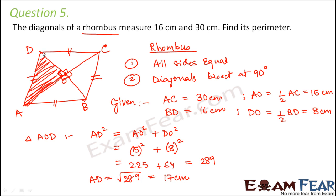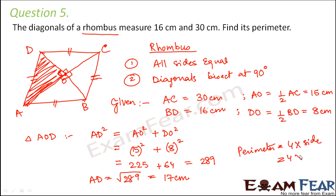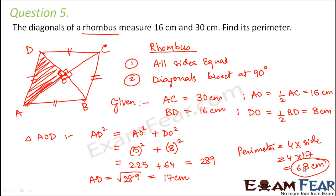Therefore we found one side of the rhombus, which is 17 centimeters. The perimeter equals the sum of all four sides, that is 4 times the side, which equals 4 into 17, which is equal to 68 centimeters. Therefore the perimeter of the rhombus is 68 centimeters.